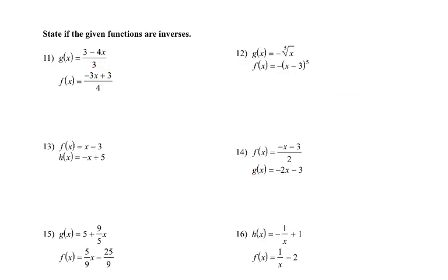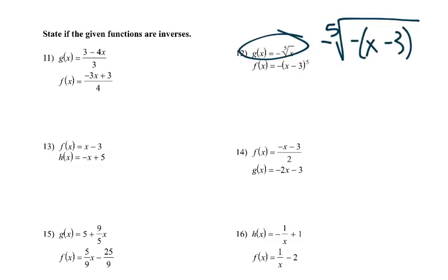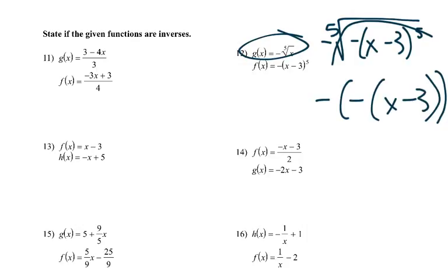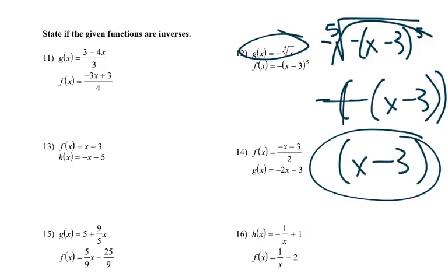Let's try number 12. It doesn't matter which one you put into the other. So negative 5th root of (negative x minus 3) to the 5th. The 5th power and the 5th root undo each other, leaving negative(negative x minus 3). The negatives become positive: x plus 3. That didn't come up to be x, so number 12 is no — they are not inverses.